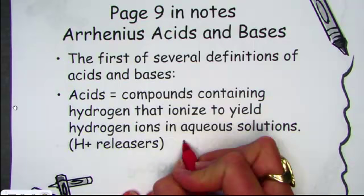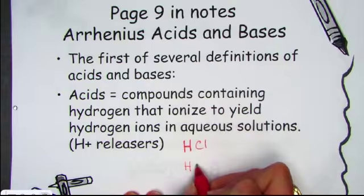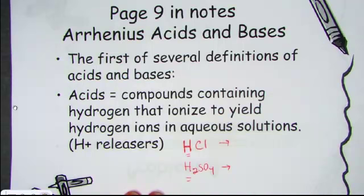Any compound that starts with an H — HCl, H₂SO₄ — we've learned to recognize that when they start with an H, they're an acid. And that's really coming from the first of our definitions, the Arrhenius acid.